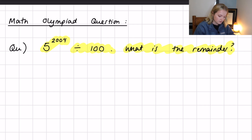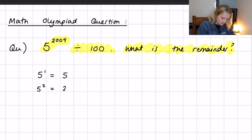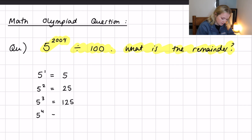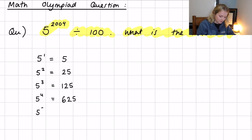We can start by thinking about the number 5 raised to different powers. For example, 5 to the 1 is obviously 5; 5 squared is 25; 5 cubed is 125; 5 to the power 4 is 625; and for good measure, 5 to the 5 gives us 3125.